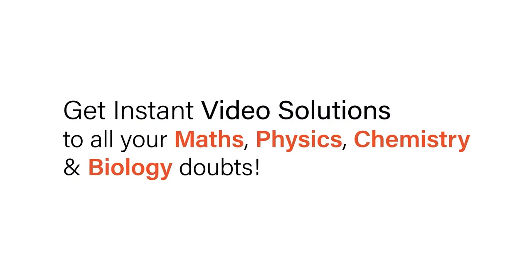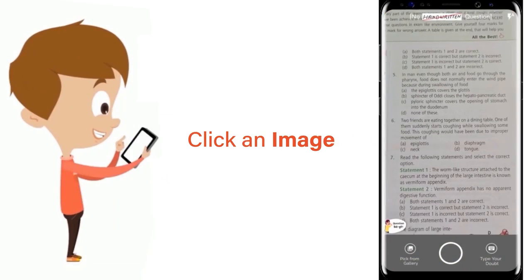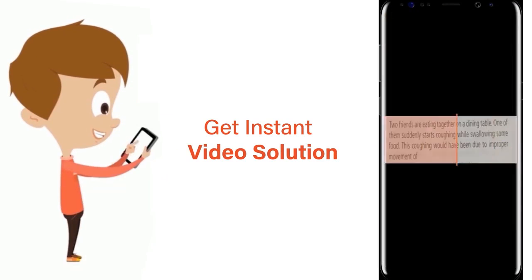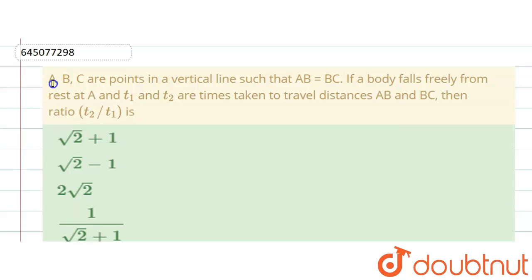With Doubtnut, get instant video solutions to all your maths, physics, chemistry, and biology doubts. Just click the image of the question, crop the question, and get instant video solution. Download Doubtnut app today. Question is given: A, B, C are points in a vertical line.